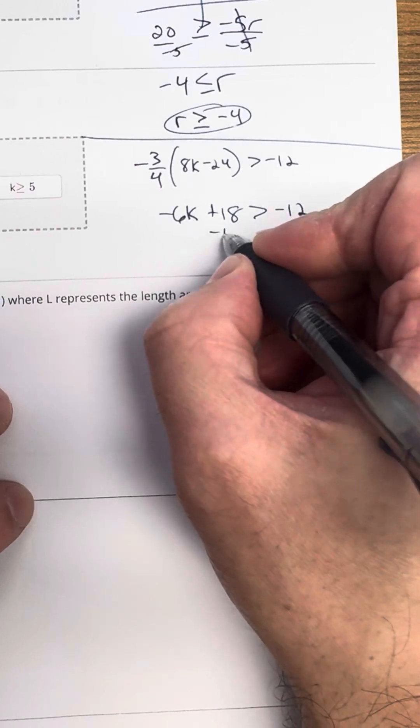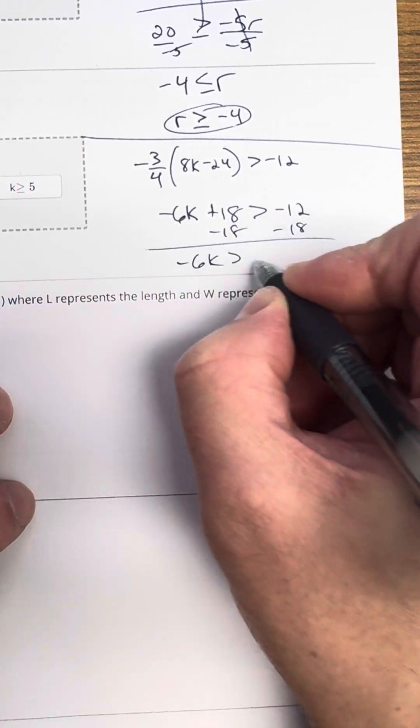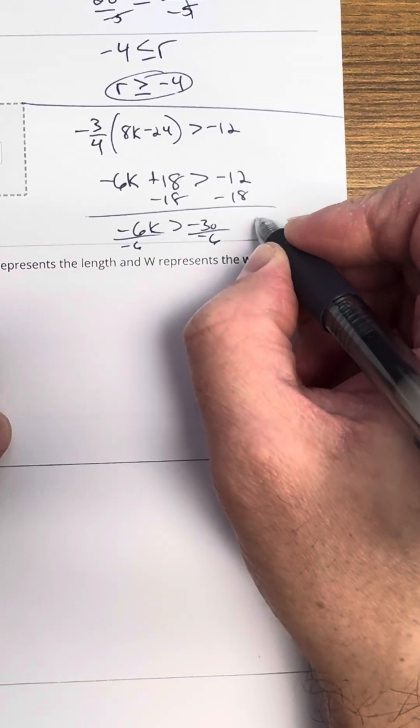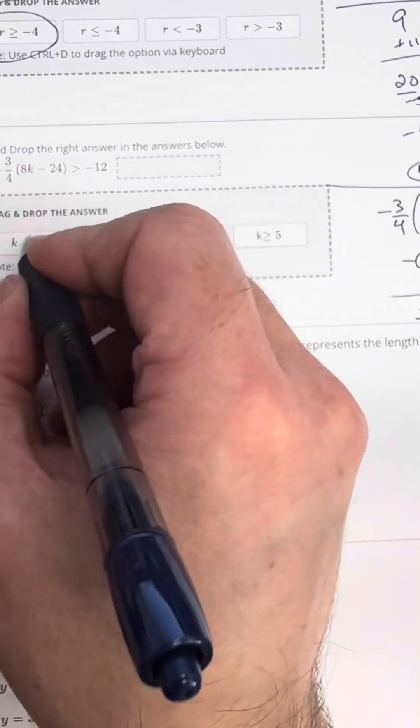Again, I did that in my head. Use the calculator. Don't be like me. Okay, minus 18 on both sides and negative 6K is greater than negative 30. We're going to divide by negative 6 on both sides, which is the golden rule. So we're going to have K is less than 5 and K is less than 5 is right there.